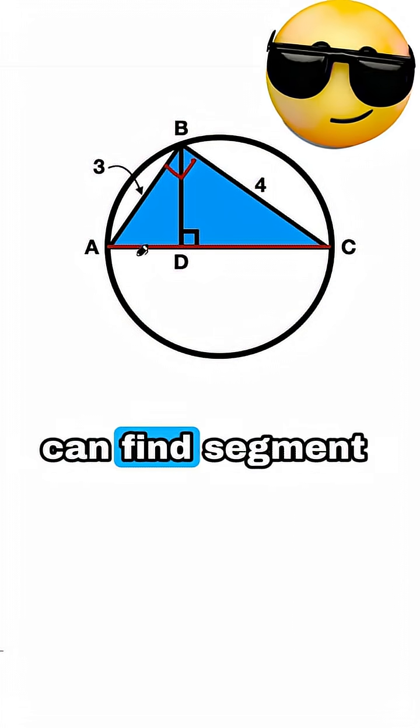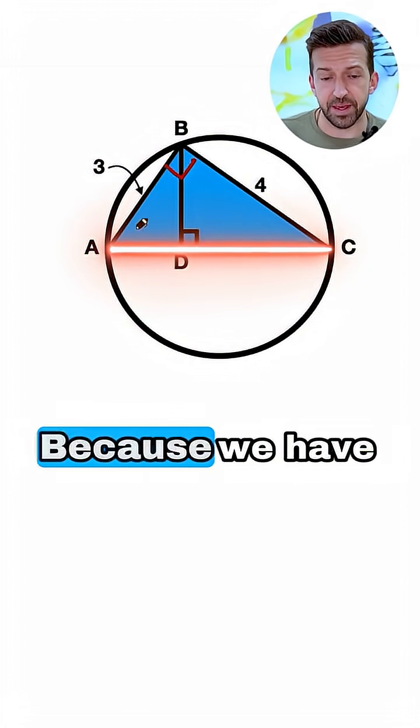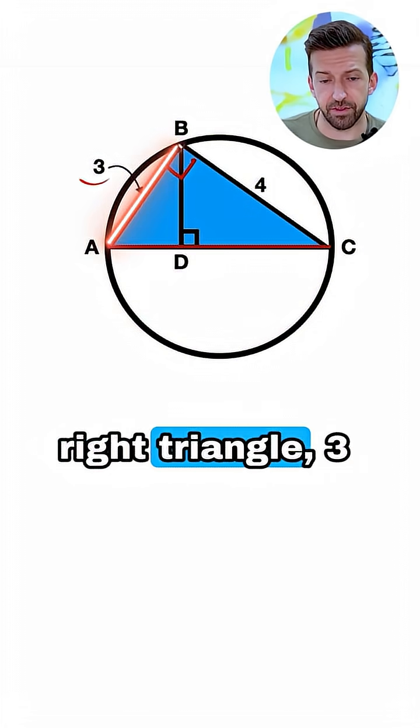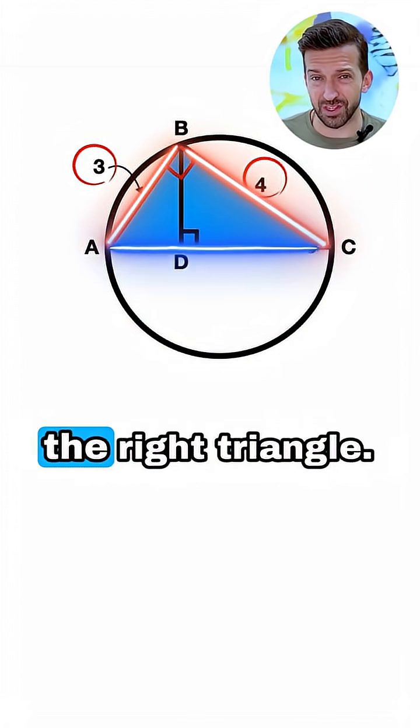That means we can find segment AC using the Pythagorean Theorem, because we have two legs of the right triangle, 3 and 4, and what we're looking for is the hypotenuse of the right triangle.